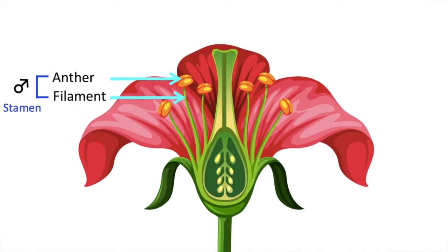As you can see, each consists of an anther that's held up on a filament. The anthers produce pollen grains.